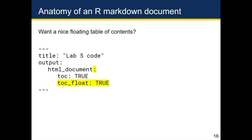You might wonder why toc underscore float is not tabbed one further than toc. If toc float were modifying toc, you'd need to tab it further. But in R Markdown documents, toc float actually modifies the R Markdown document directly, so you must specify both toc colon true and toc underscore float colon true for the floating table of contents to appear.